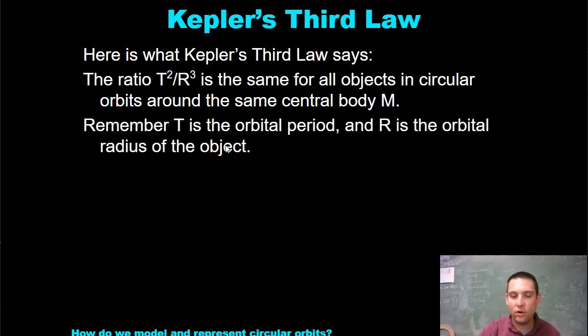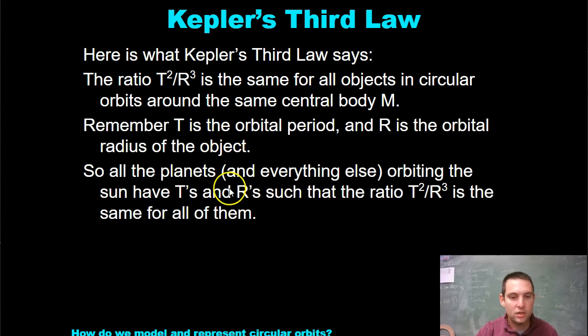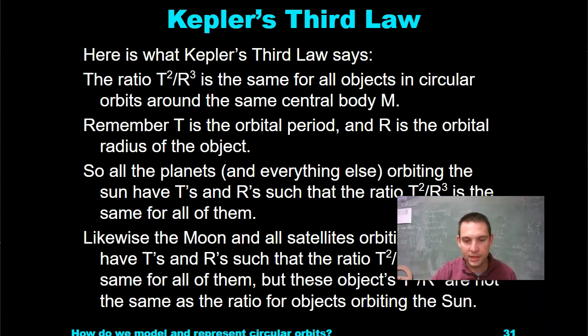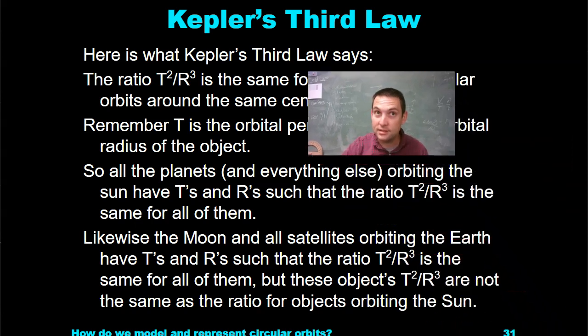Remember, T is the orbital period, and R is the orbital radius of the object. So all the planets and everything else orbiting the Sun have T's and R's so that ratio is the same for all of them. Likewise, the Moon and all satellites orbiting the Earth have T's and R's such that the ratio T²/R³ is the same for all of them. But these objects' T²/R³ are not the same as the ratio for objects orbiting the Sun.